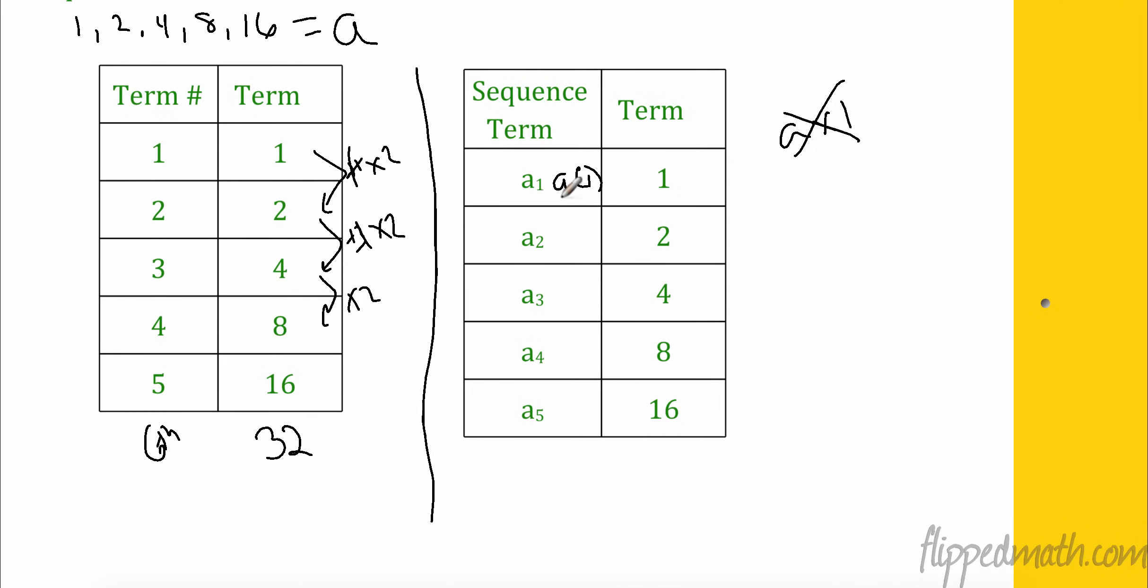So this is A. So now I'm going to label it like this. I want to know A of one. And I say it A of one. This is not A times one. It is not A times one. It is A of one. What is the term in sequence A at one? Well, it is one. So this would be A, excuse me, A of two. This would be A of three. A of four. A of five. And if I said, what is A of seven? Well, we could find A of seven because we know A of six is 32. Multiply it by again. A of seven would be 64. All right?